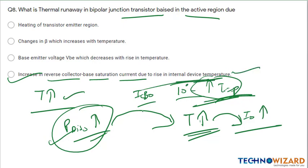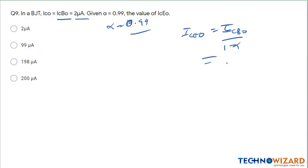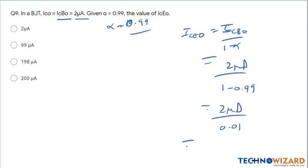Remember this type of question — these are very important conceptual questions. Question number 9: in a BJT, ICO or ICBO is equal to 2 micro ampere and alpha is equal to 0.99. We know that ICEO = ICBO / (1 - alpha) = 2 micro ampere / (1 - 0.99) = 2 micro ampere / 0.01 = 200 micro ampere. Therefore option D is the correct answer.